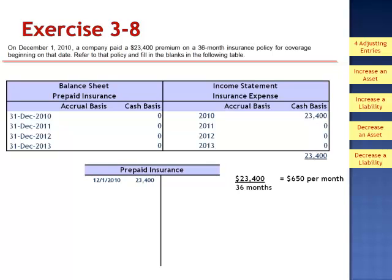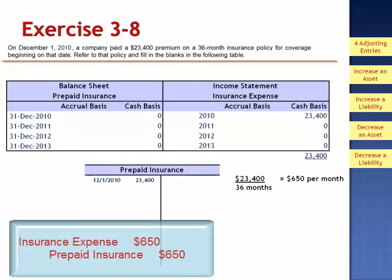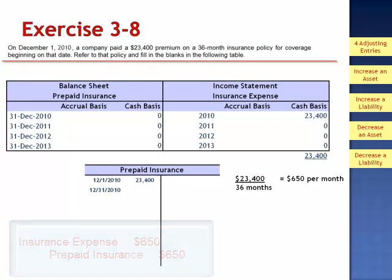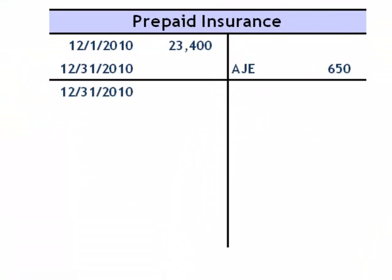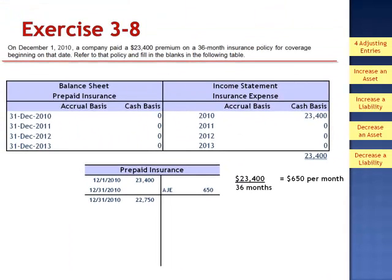When we go to prepare financial statements on December 31st, we need to recognize one month of expense. The journal entry would be a debit to insurance expense for $650 and a credit to prepaid insurance. The balance in prepaid insurance on the balance sheet as of December 31st, 2010 would be $22,750. So under the accrual basis, $650 would appear on the income statement as insurance expense in 2010, leaving a balance in prepaid insurance of $22,750. We had insurance coverage for one month, and we record one month of expense.